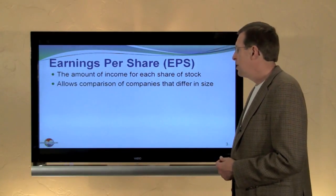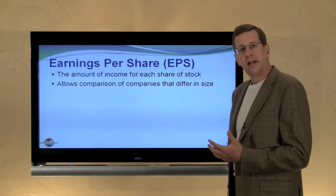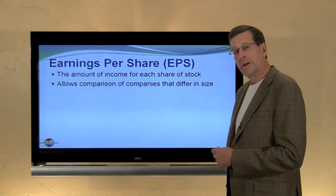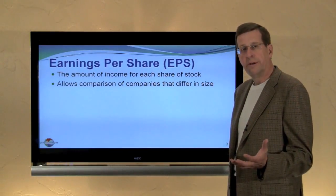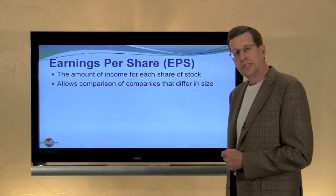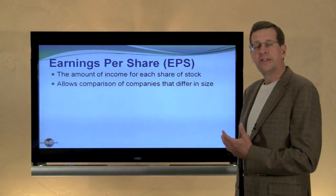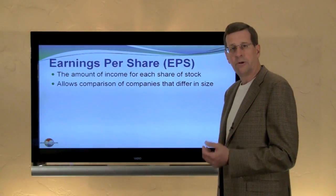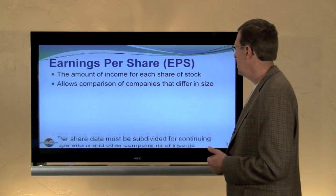It allows comparisons of companies of different sizes. For example, two companies that each make a million dollars of profit. If one company had a million shares, their earnings per share would be a dollar a share. If the other company only had a hundred thousand shares outstanding, their earnings per share would be ten dollars per share. Obviously the earnings of the latter company on a per share basis is much stronger, even though the corporate income is the same.